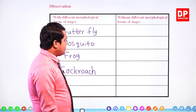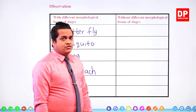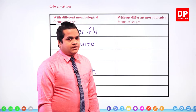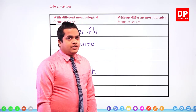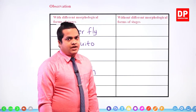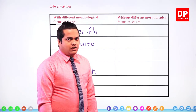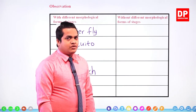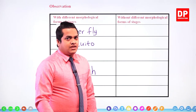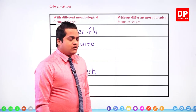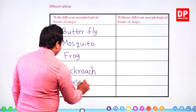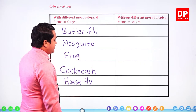Housefly is born as maggots: eggs first, then eggs convert into maggots, then maggots convert into a housefly going through several processes like the mosquito. They are born from eggs, then behave as small tiny worms, then come out to the world as a fly. So housefly also shows these different morphological features from stage to stage.